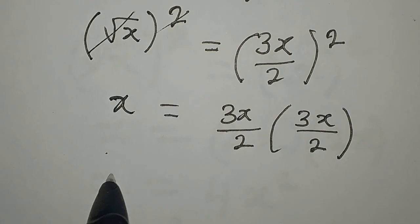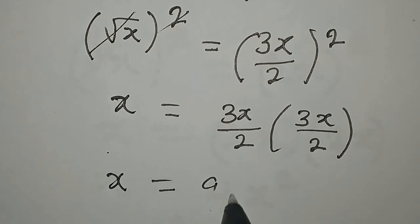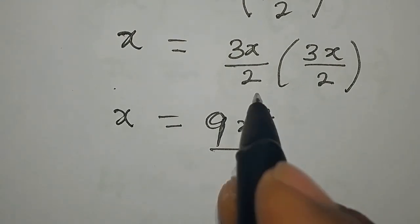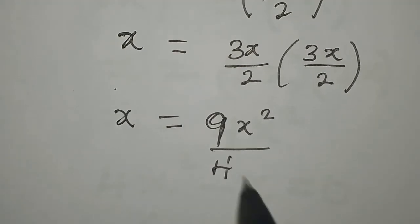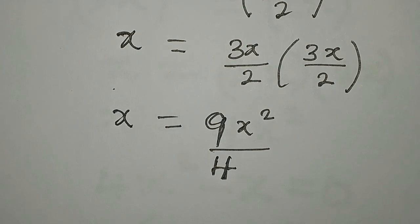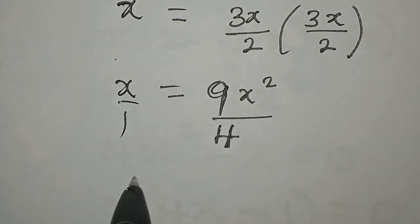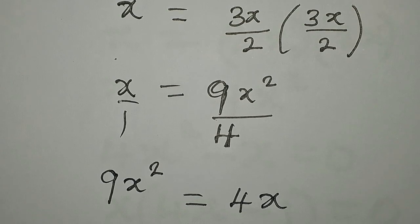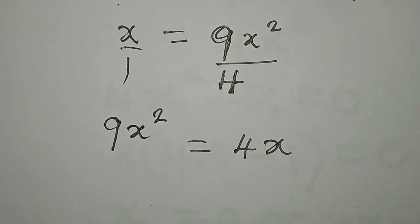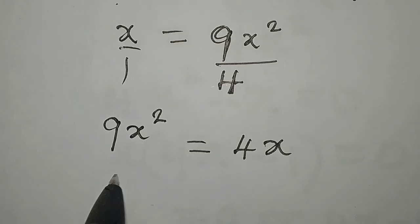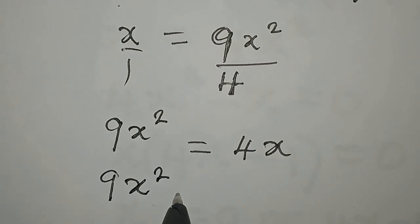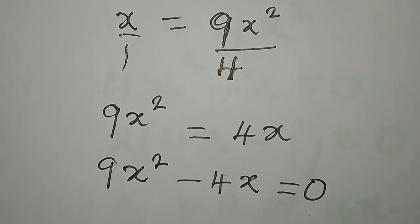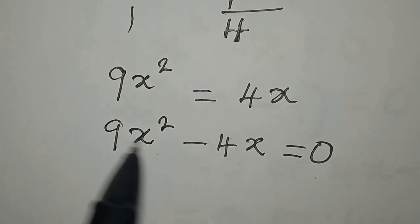Multiplying gives us x equals 9x squared over 4, since 2 times 2 is 4. Cross-multiplying again — this is over 1 — so 9x squared equals 4x. Do not divide both sides by 4 or by x. Instead, bring everything to the same side so everything equals 0. This is now a quadratic equation.